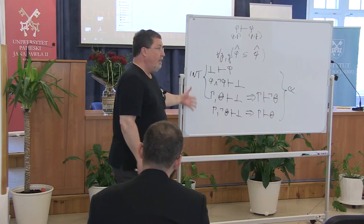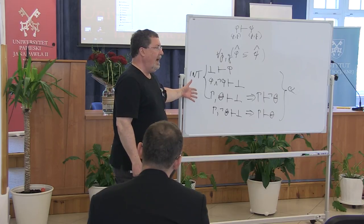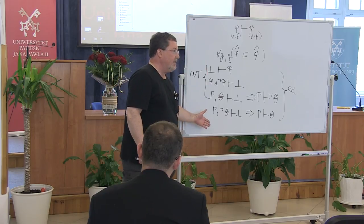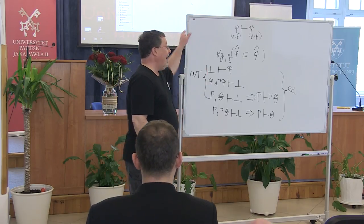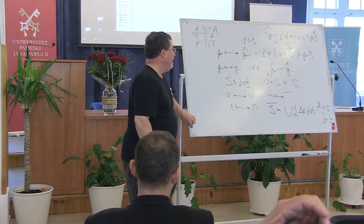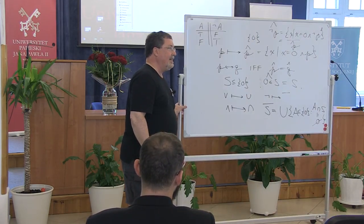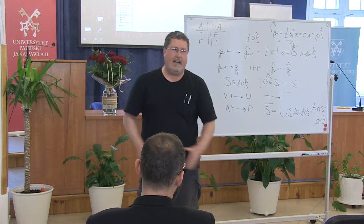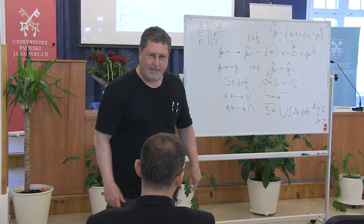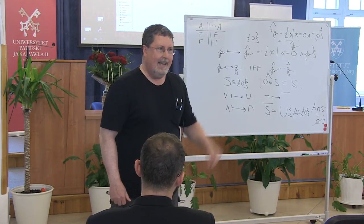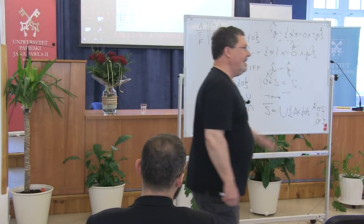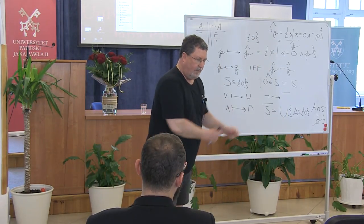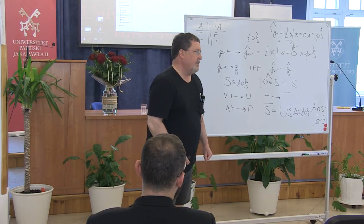Now, in the third part of my talk, I'm going to ask if this process could be reversed: if by laying down inferences like these four, you could in fact determine the meanings of the connectives — determine that this thing has classical properties by laying down classical laws, or intuitionistic properties by only laying down intuitionistic laws. That's what I'm going to be asking in the third part: whether I can reverse this process.